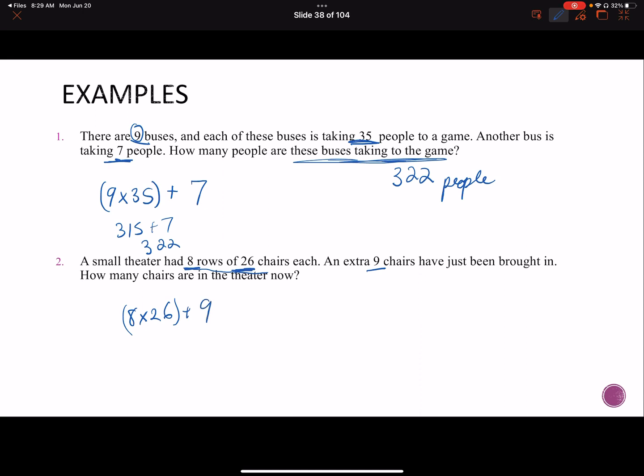And we've got to use order of operations. So eight times 26 is 208 plus nine. That gives me 217. So how many chairs? 217 chairs.